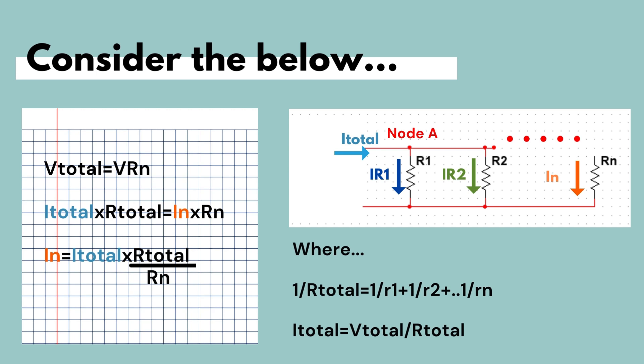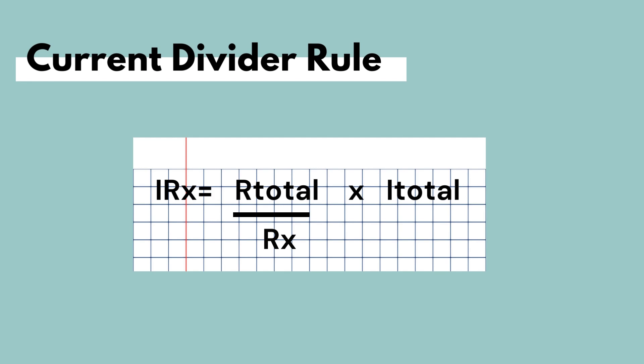Therefore, I_n can be expressed as: I_n equals (R_total / R_n) times I_total, where R_total is the equivalent parallel resistance and I_total is the total current. This gives us a shortcut in our analysis — rather than performing KCL on a node, we can directly obtain the current through a specific resistor using the current divider rule.